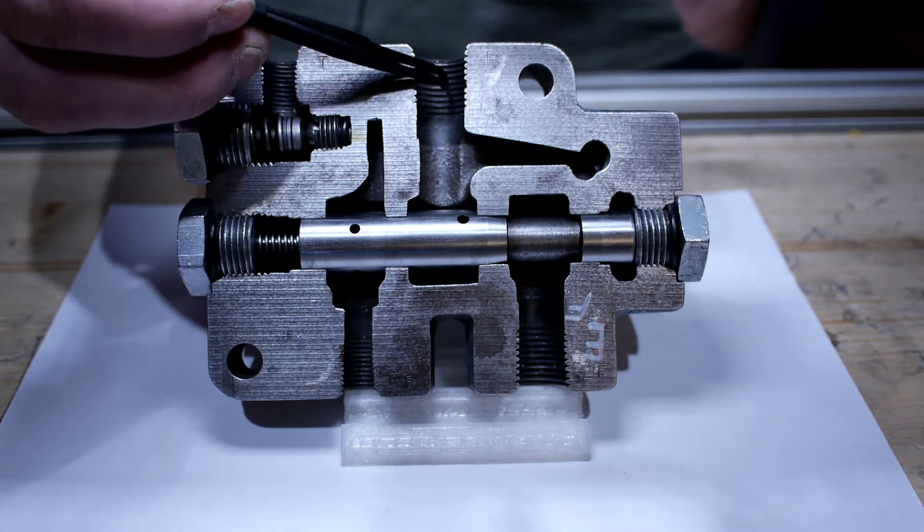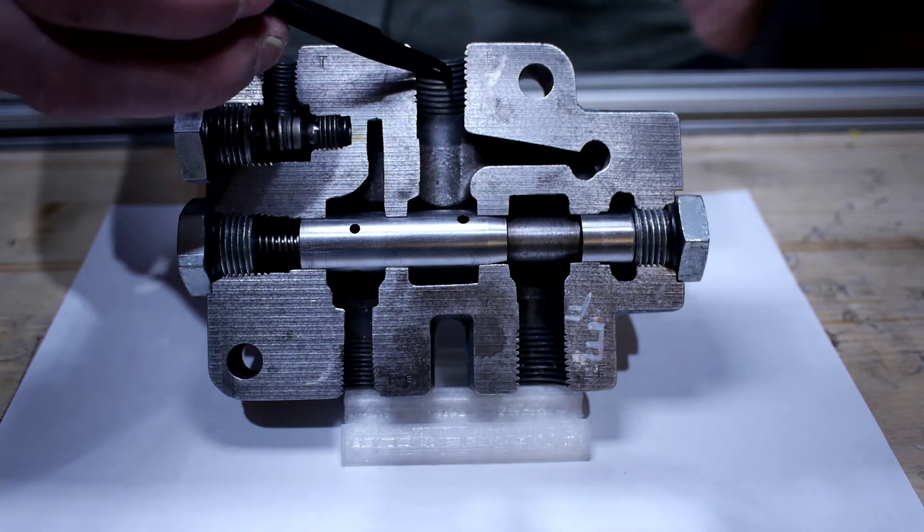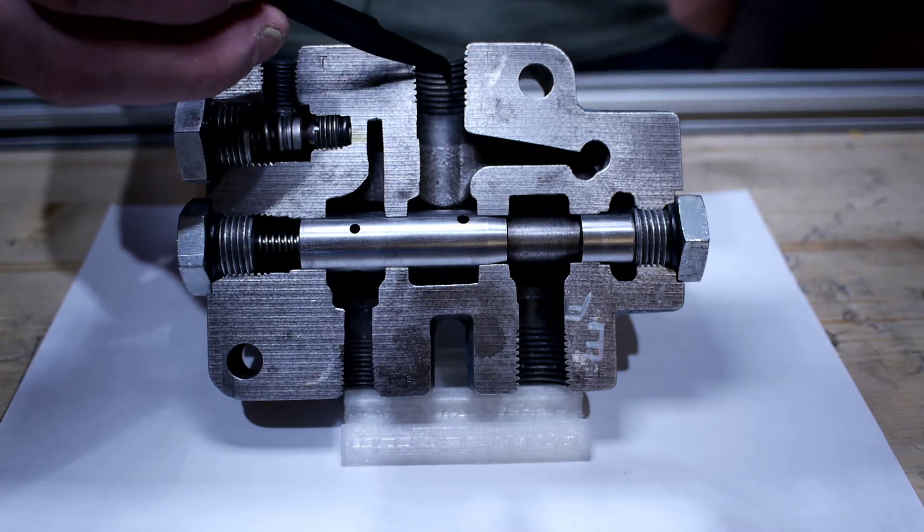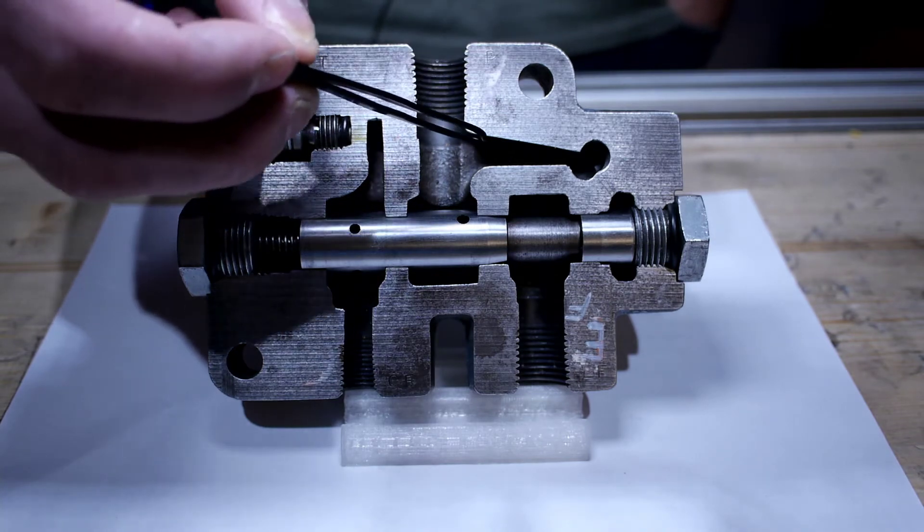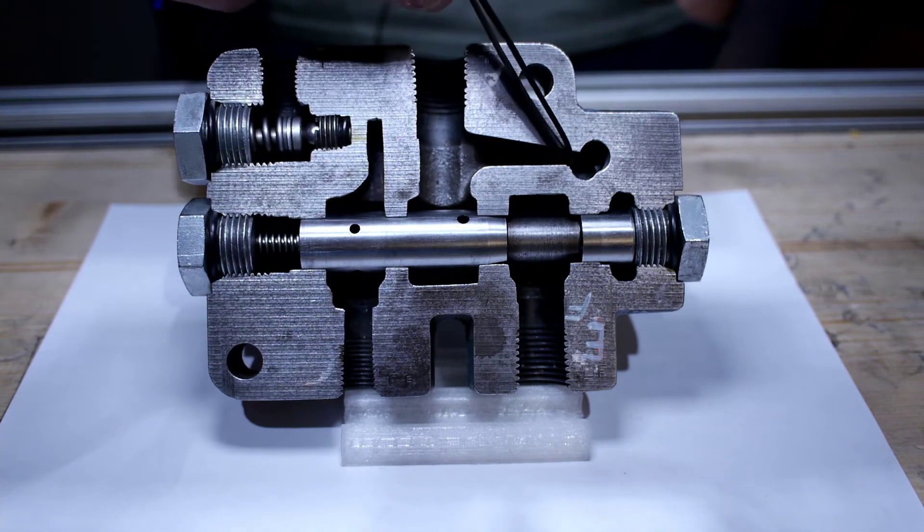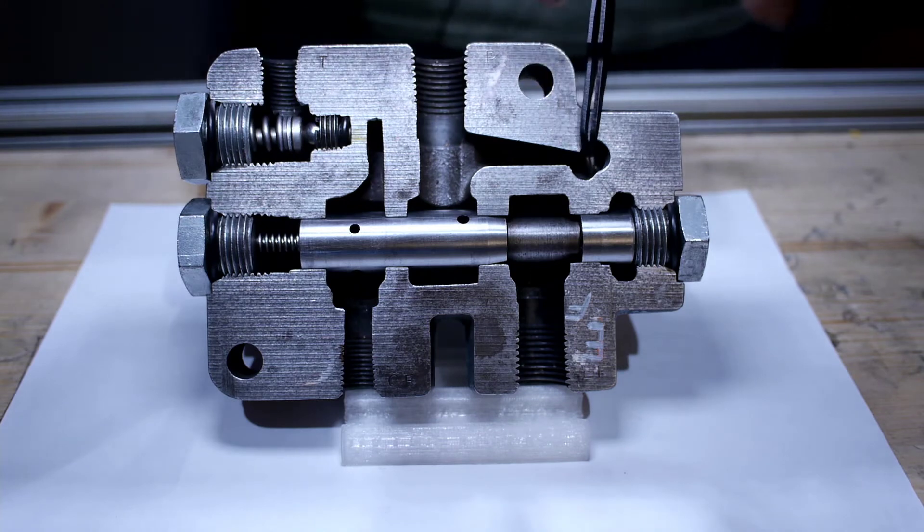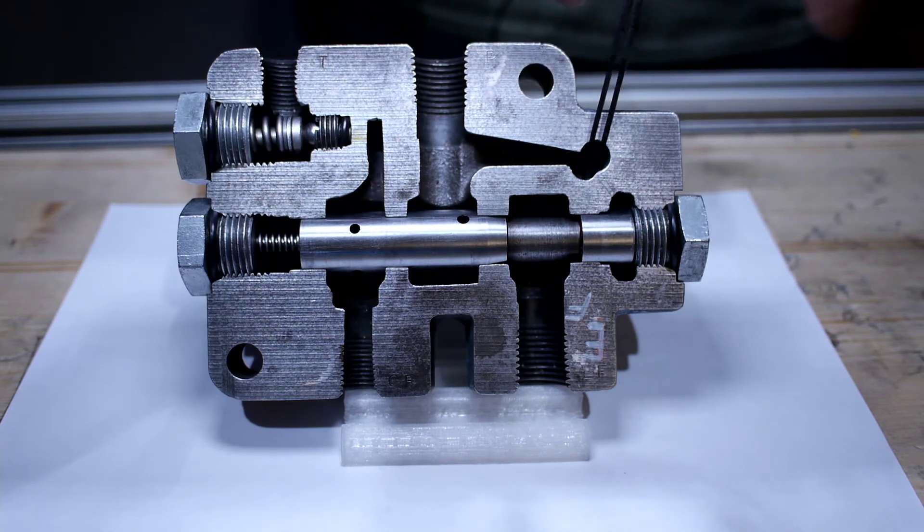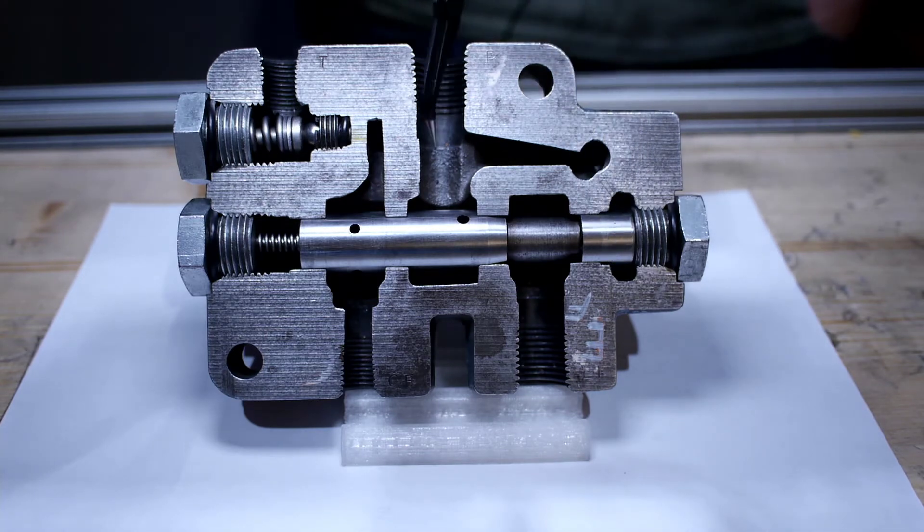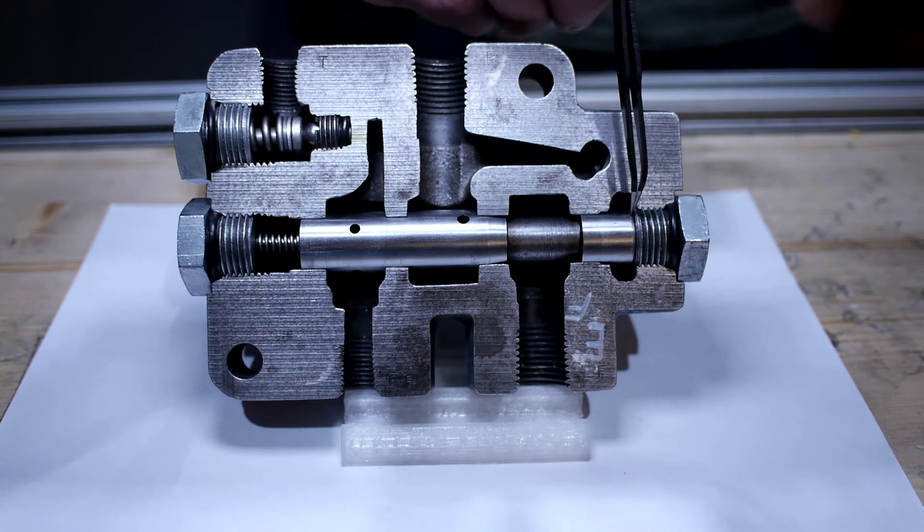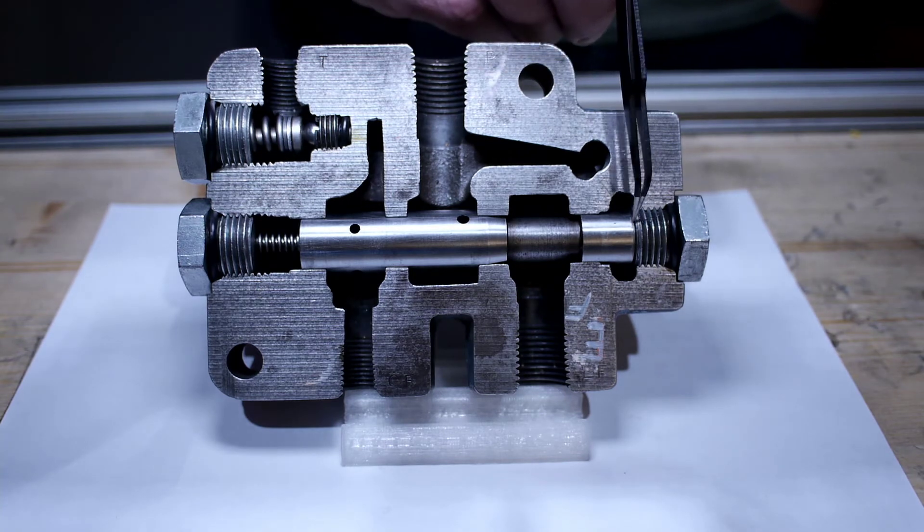We're going to use the bypass flow port or the excess flow port to do that. When the pressure is built up all back to here, it's also coming down into this passageway right here. There's a small hole right in this housing. That small hole in the housing sends the oil flow down into this end of the spool. When the pressure builds up, the pressure acts on this surface area right here to push this spool over.